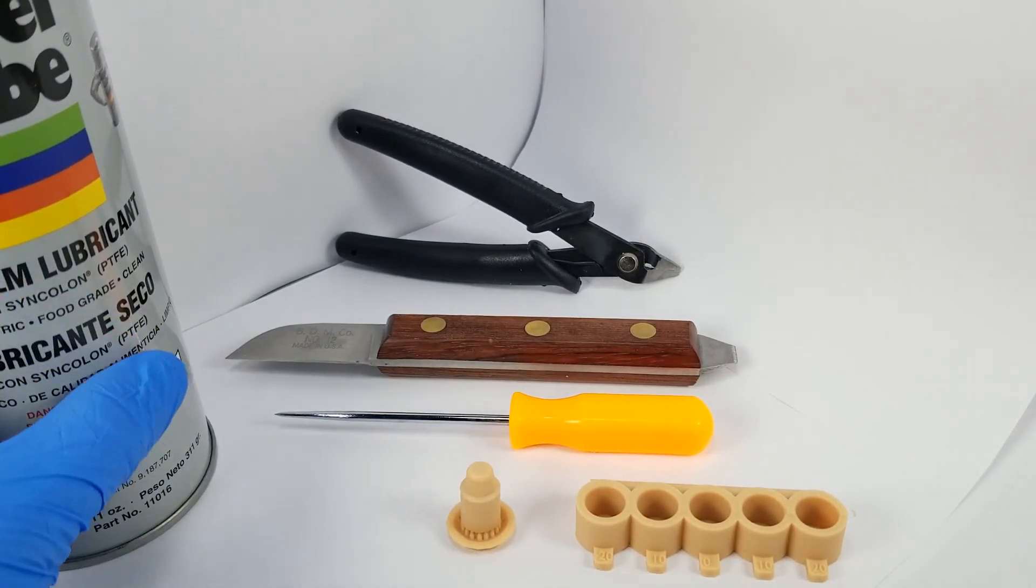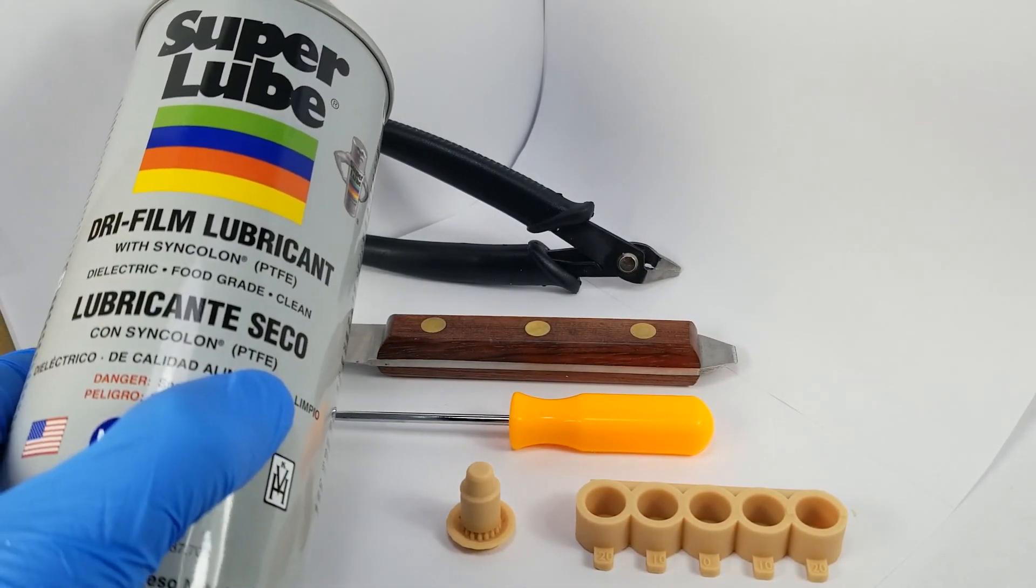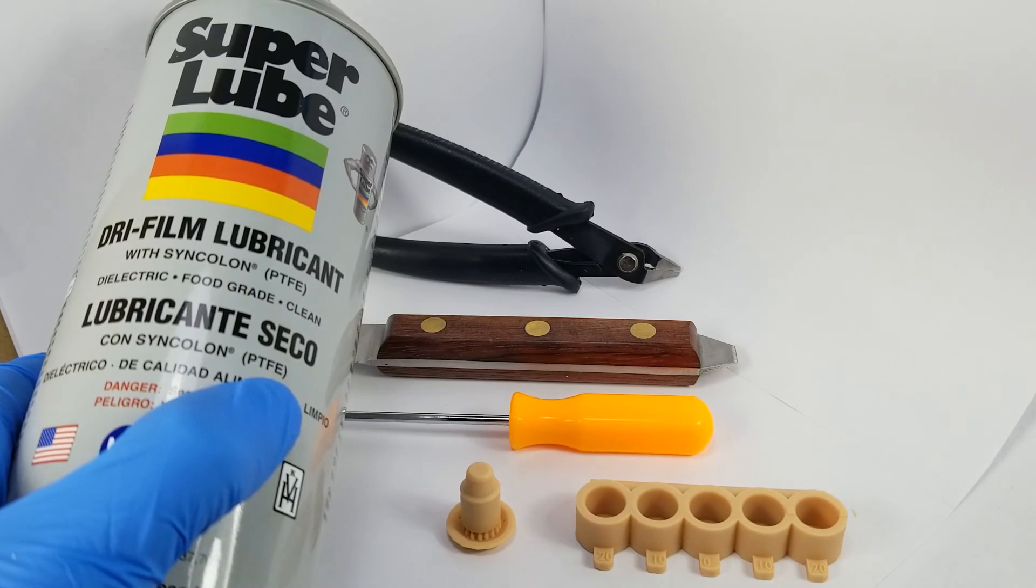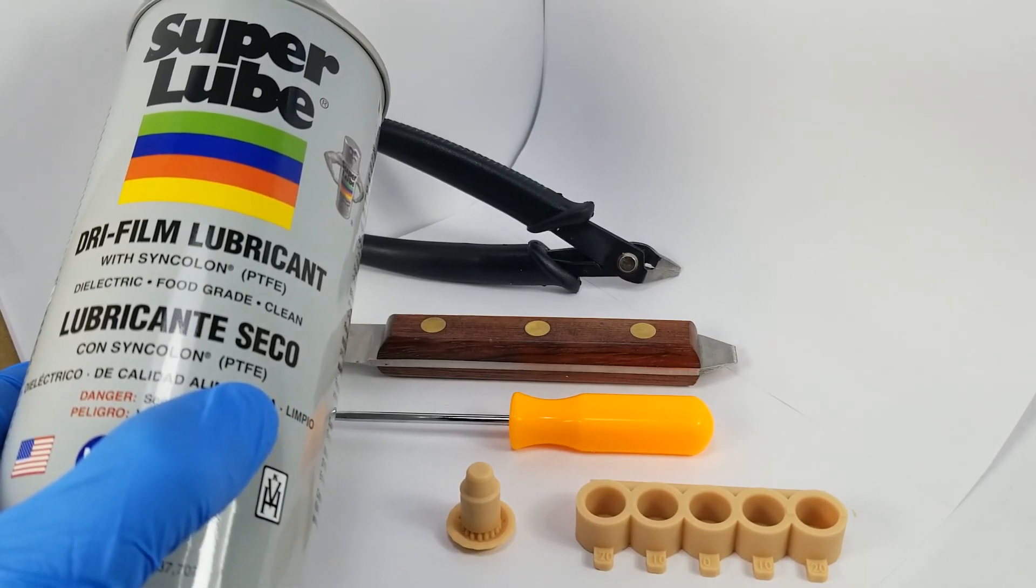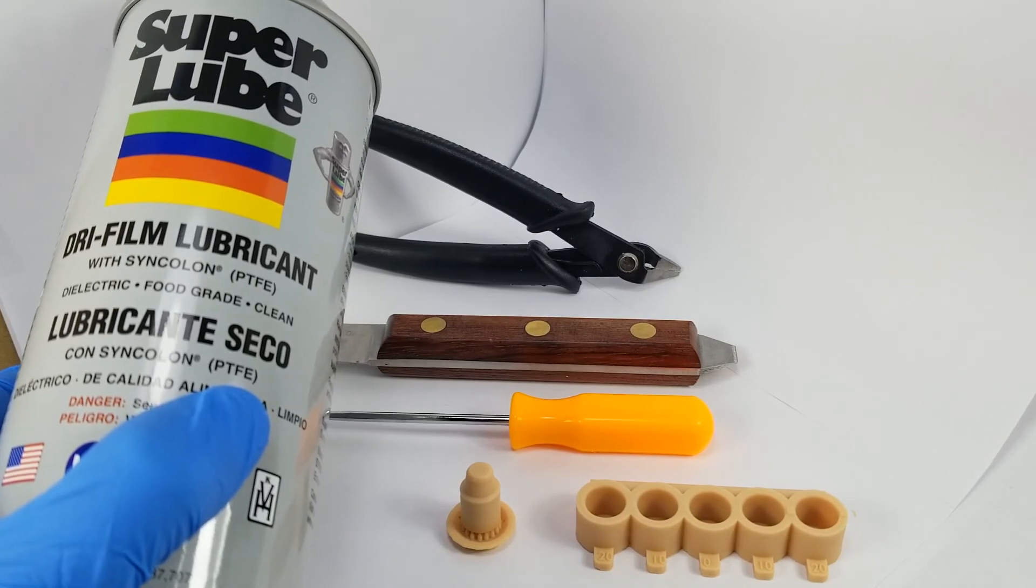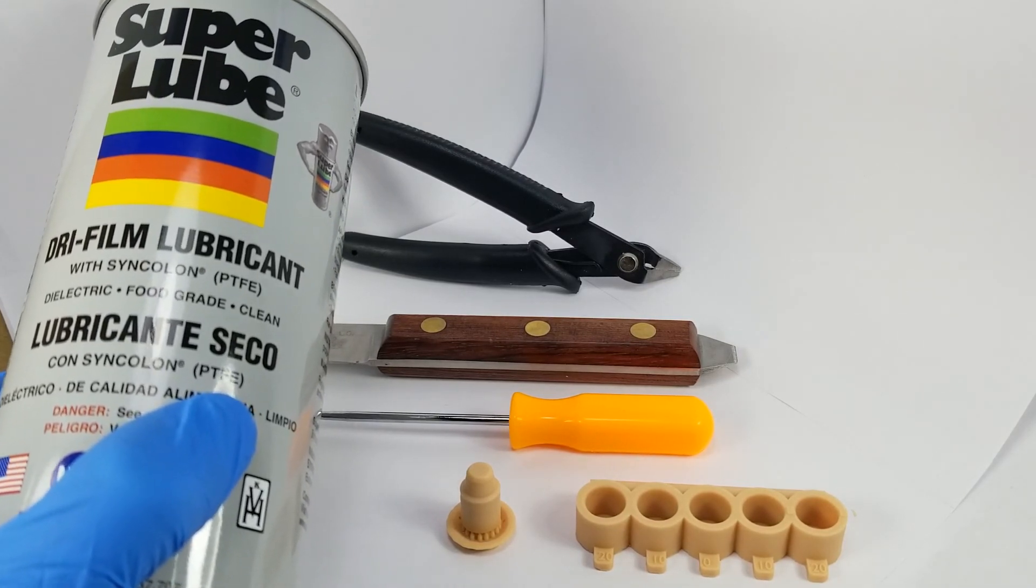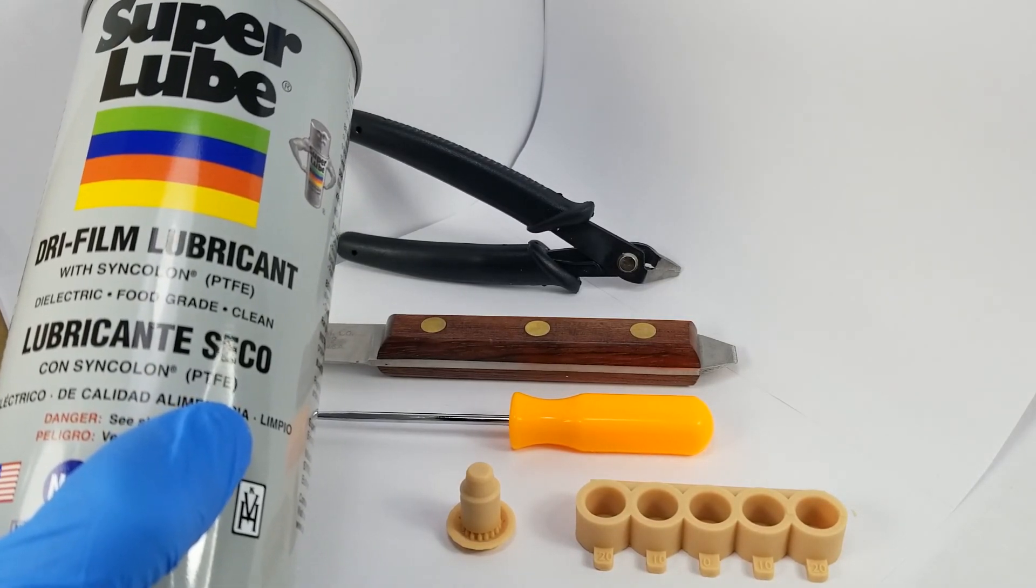And then lastly, this is my spray dry lubricant called Super Lube which will help make the seating of the die much smoother and much more repeatable and make it easy to get out and in.